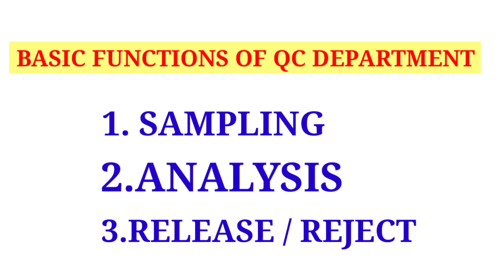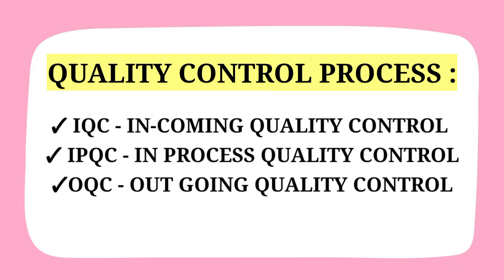The basic functions of a quality control department include sampling of raw materials, finished products, and in-process materials, as well as analysis of those sampled materials, and the release or rejection of the materials.